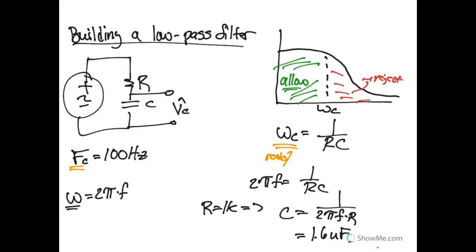So if we were going to build this circuit and we selected a 1 KΩ resistor, we would need a 1.6 microfarad capacitor. What may happen is that you go over to the bin in the lab and find you don't have a 1.6 microfarad capacitor. Usually we have more free choices of resistors than capacitors, so in a practical sense, I would start with a known capacitor value — something that's in the area.